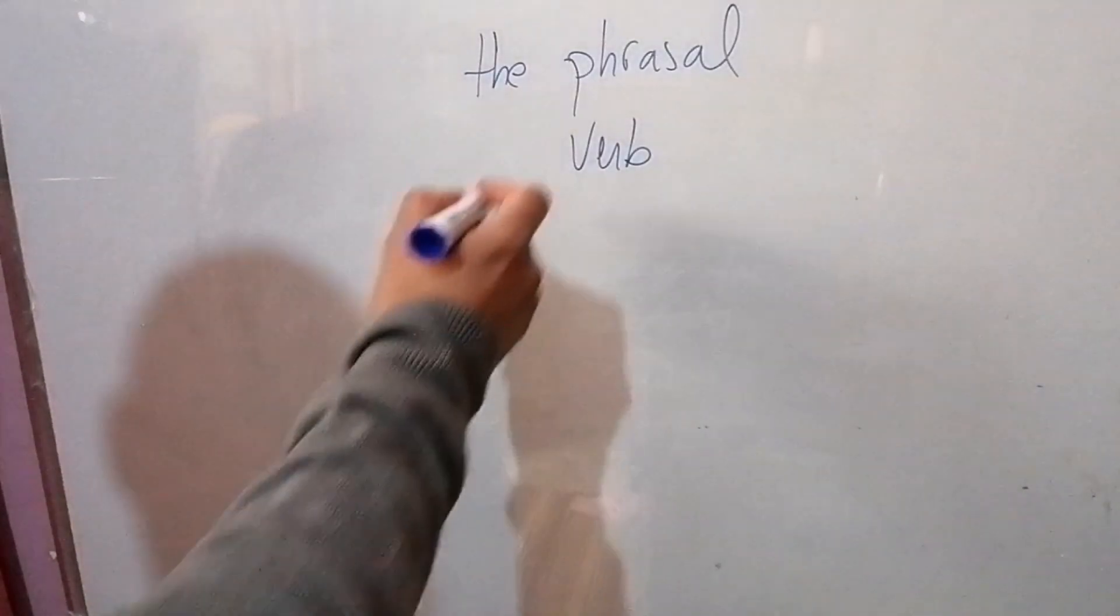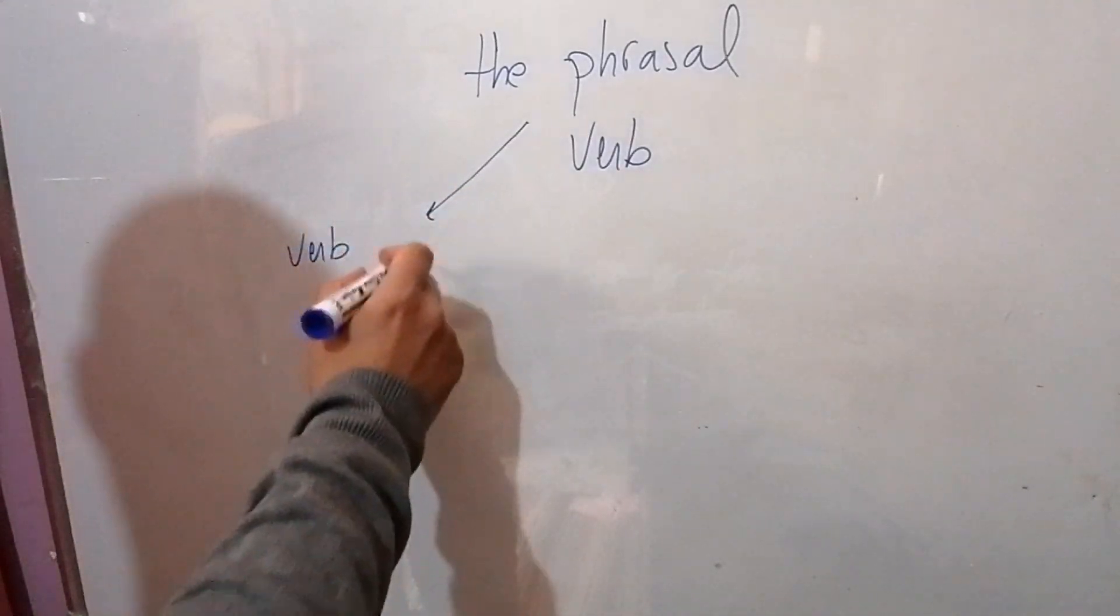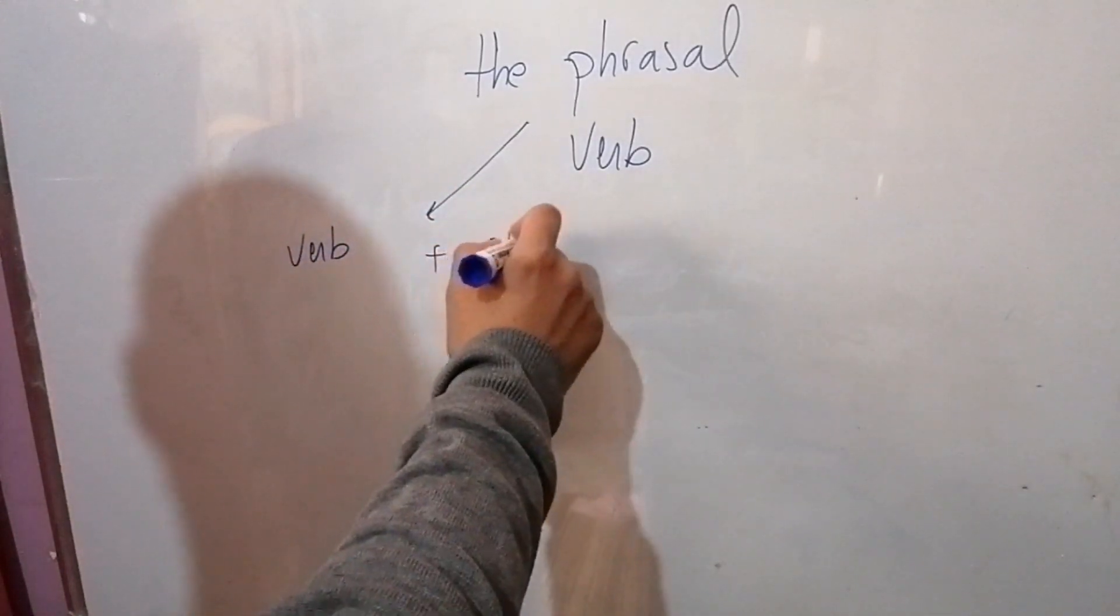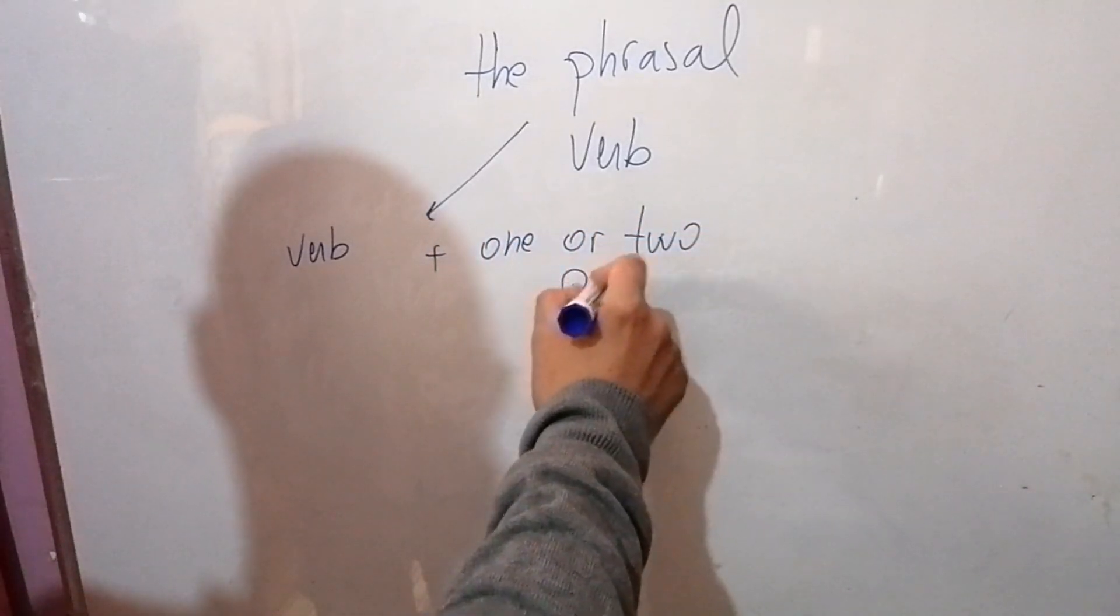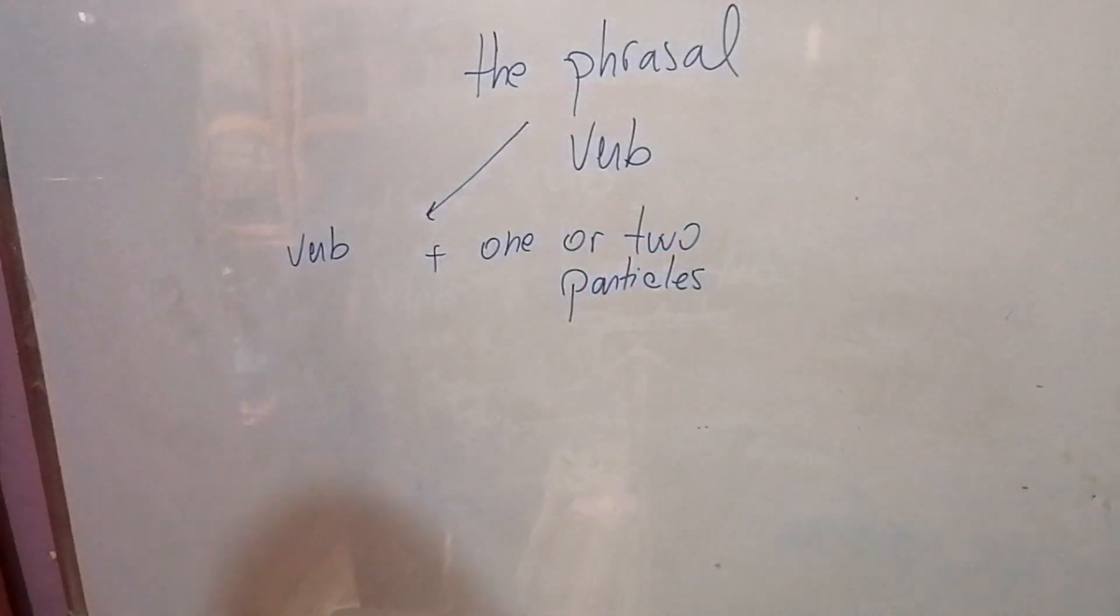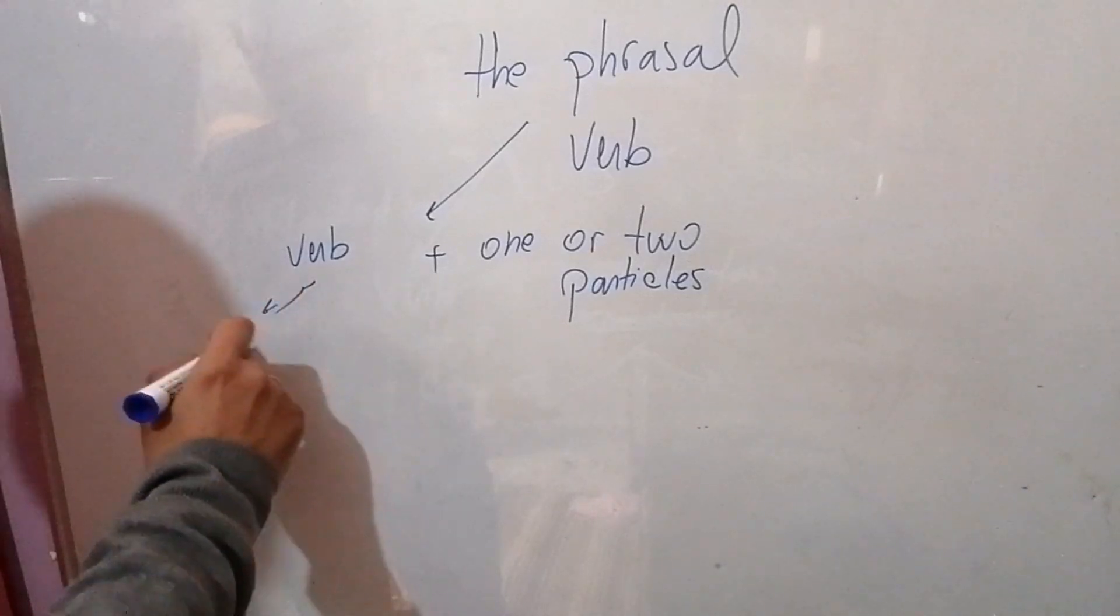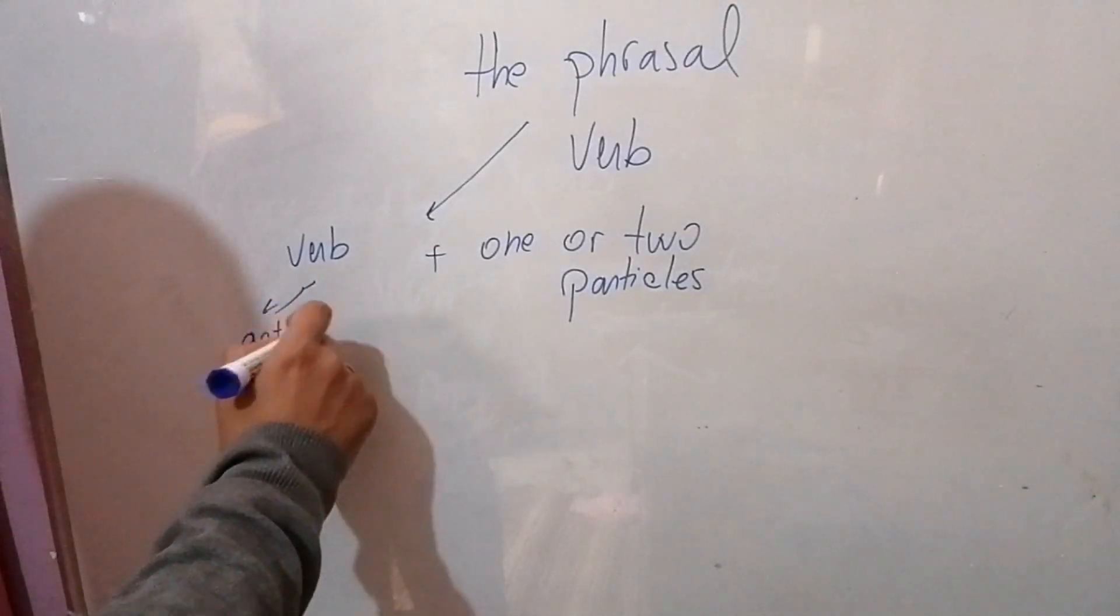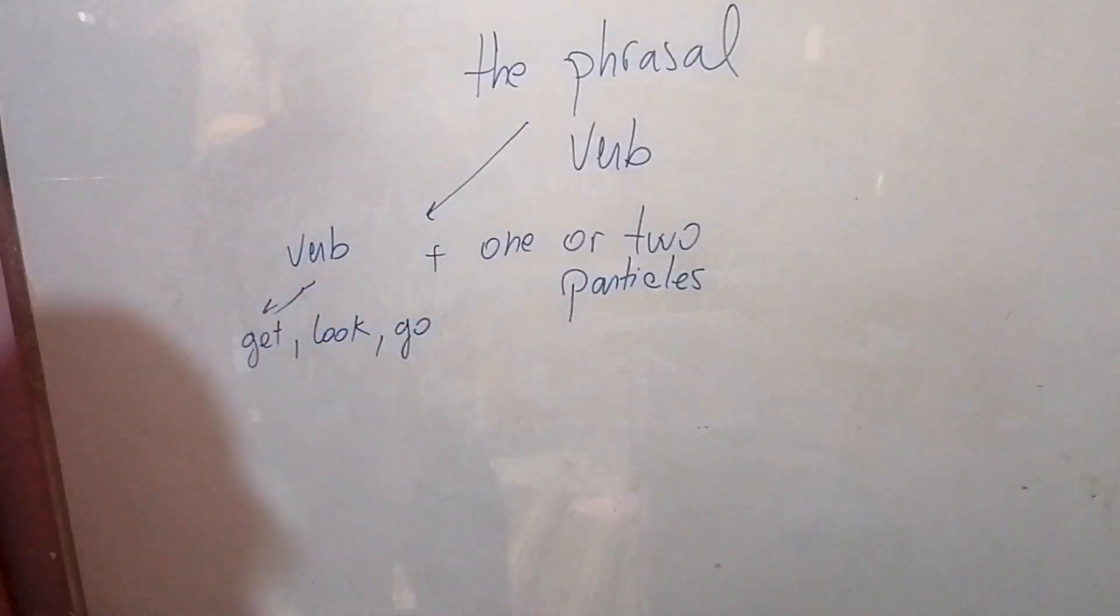Simply, the phrasal verb is the combination between a verb plus one or two particles. The verb can be a standard verb, can be get, look, go, etc. Verb plus one or two particles.